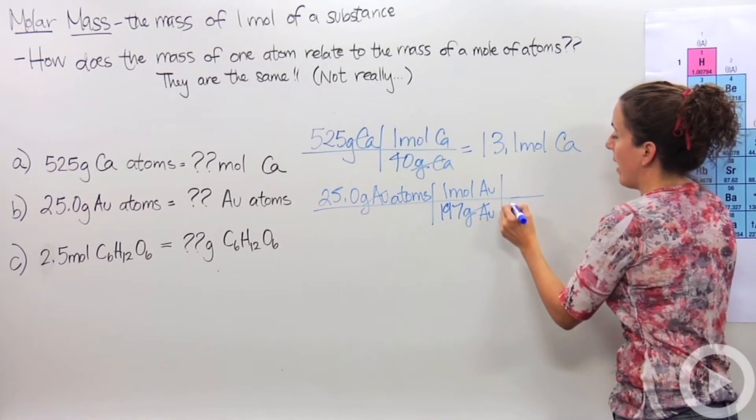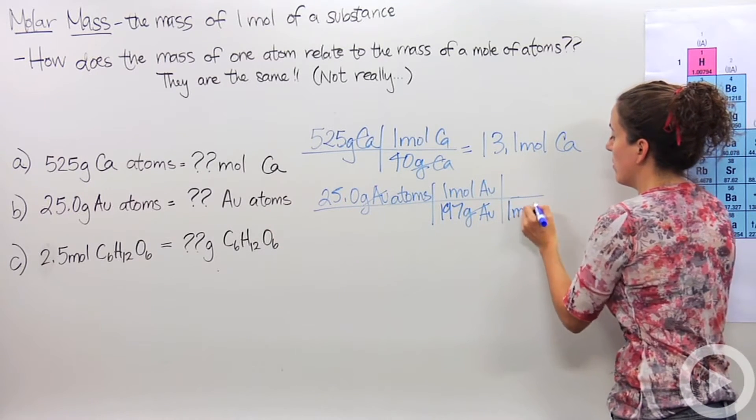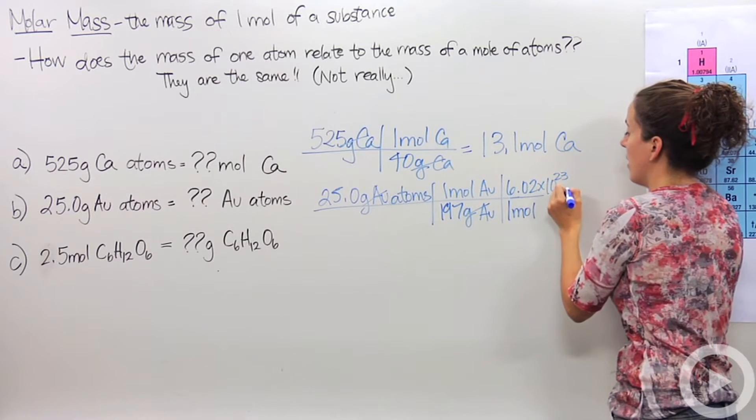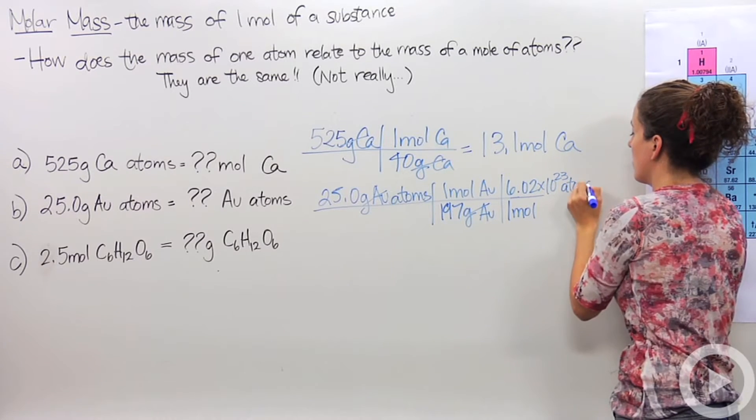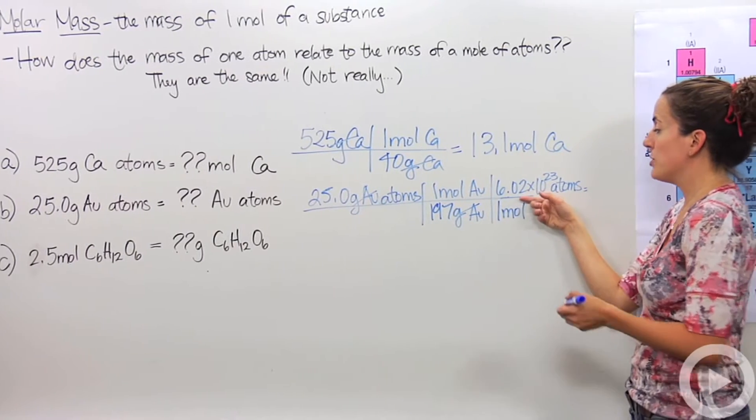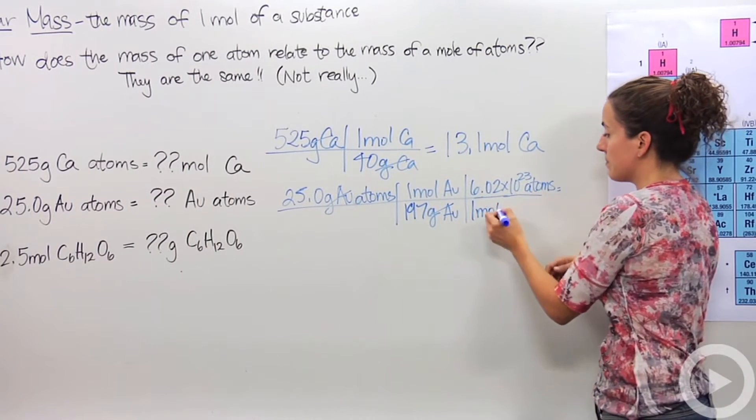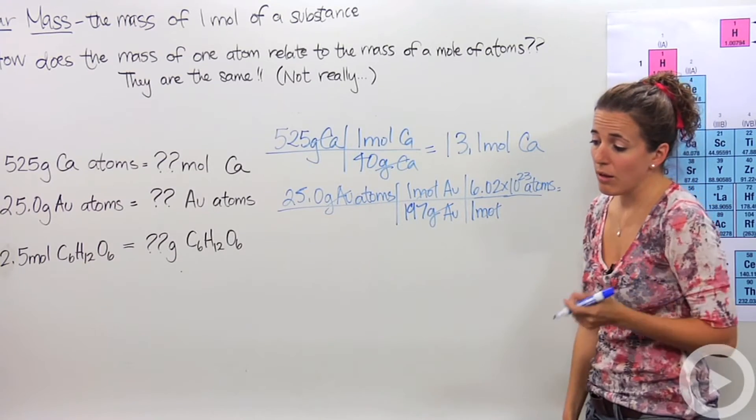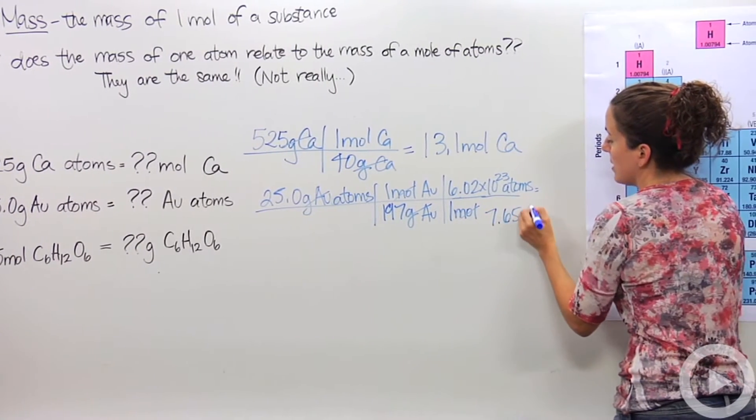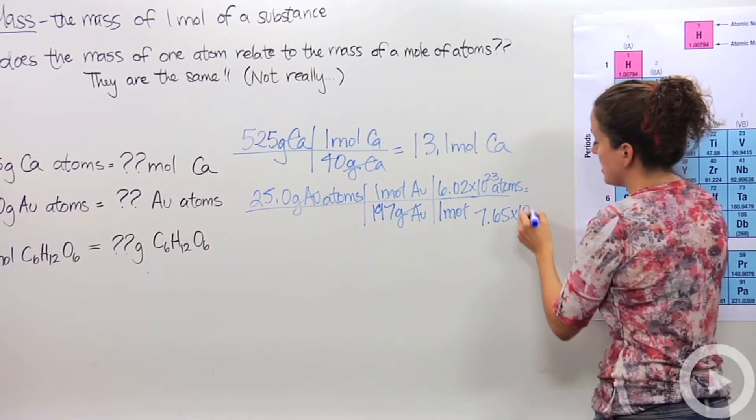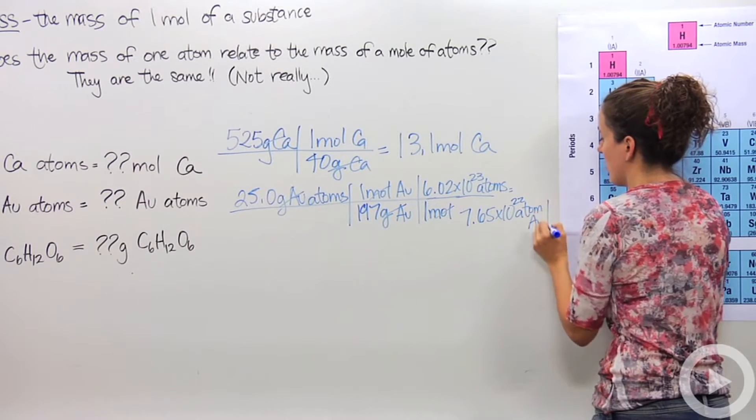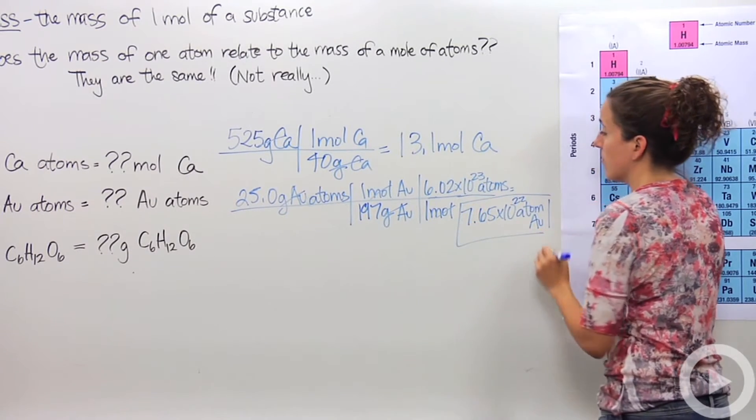Let's continue and say that we have for every one mole, we have 6.02 times 10 to the 23rd atoms. So now we have to do 25 divided by 197 times 6.02 times 10 to the 23rd atoms. This crosses out. How many gold atoms is that? Well, we have 7.65 times 10 to the 22nd atoms of gold.